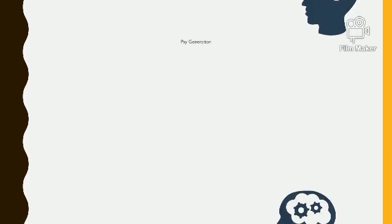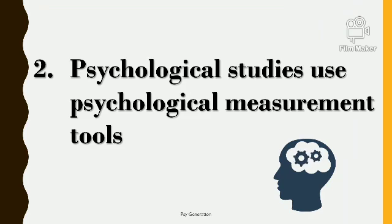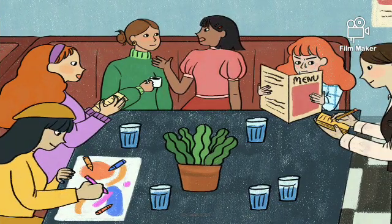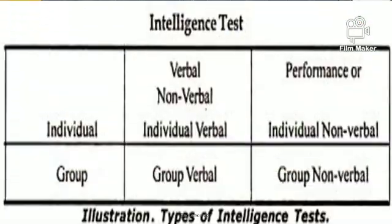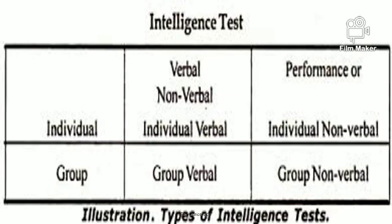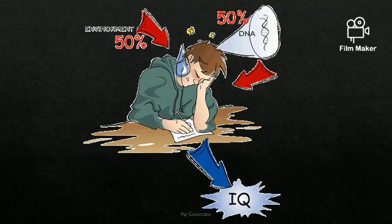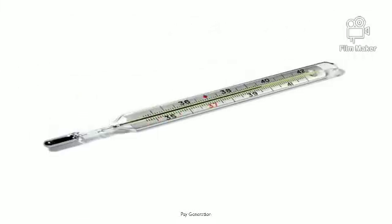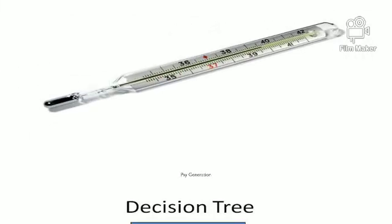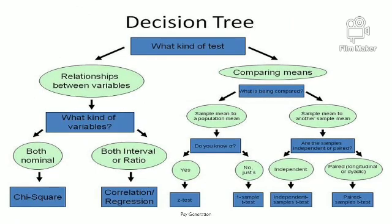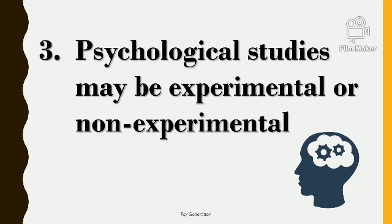Second, psychological studies use psychological measurement tools. Unlike physical measurement, psychological measurement is not direct, not fixed — it is indirect. For example, measuring a person's personality or measuring a person's intelligence by an intelligence test is an example of psychological measurement, because here the psychologist is not using any external devices or tools like a thermometer. They use standardized scales and tests.